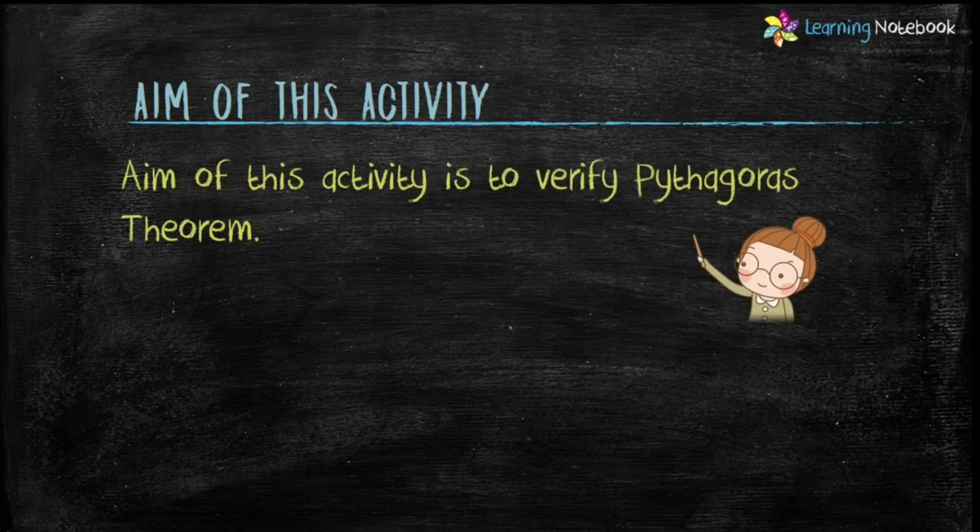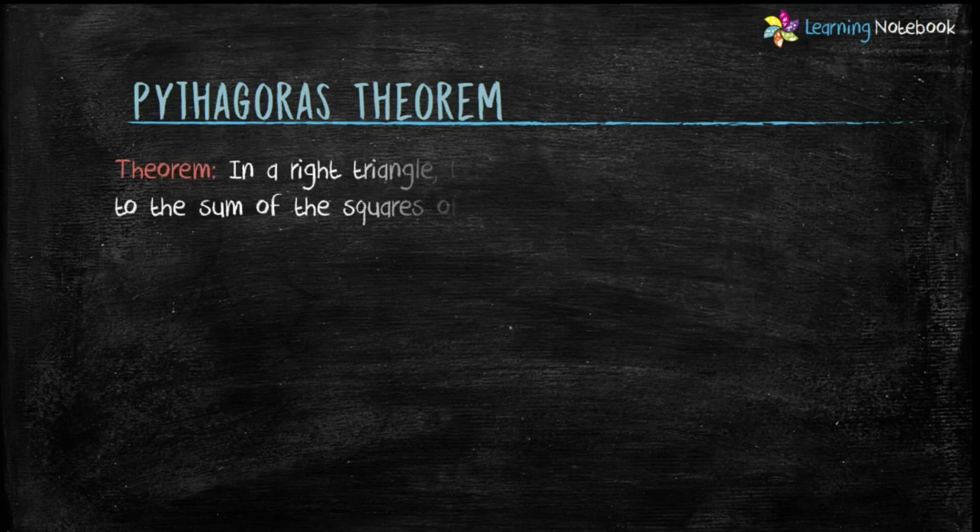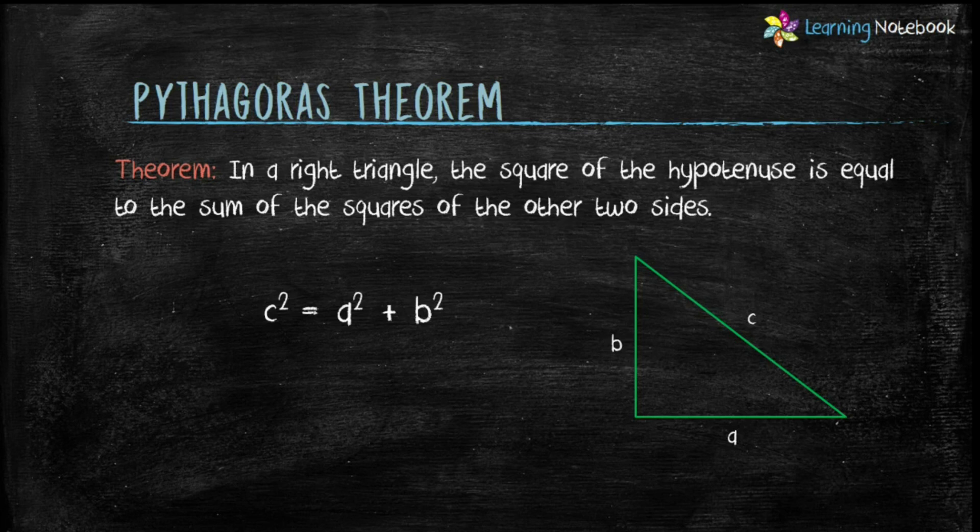The aim of this activity is to verify Pythagoras theorem. Pythagoras theorem says in a right triangle, the square of the hypotenuse is equal to the sum of the squares of the other two sides. It means in a right-angled triangle, c² = a² + b², where c is the hypotenuse, a is the base, and b is the perpendicular.